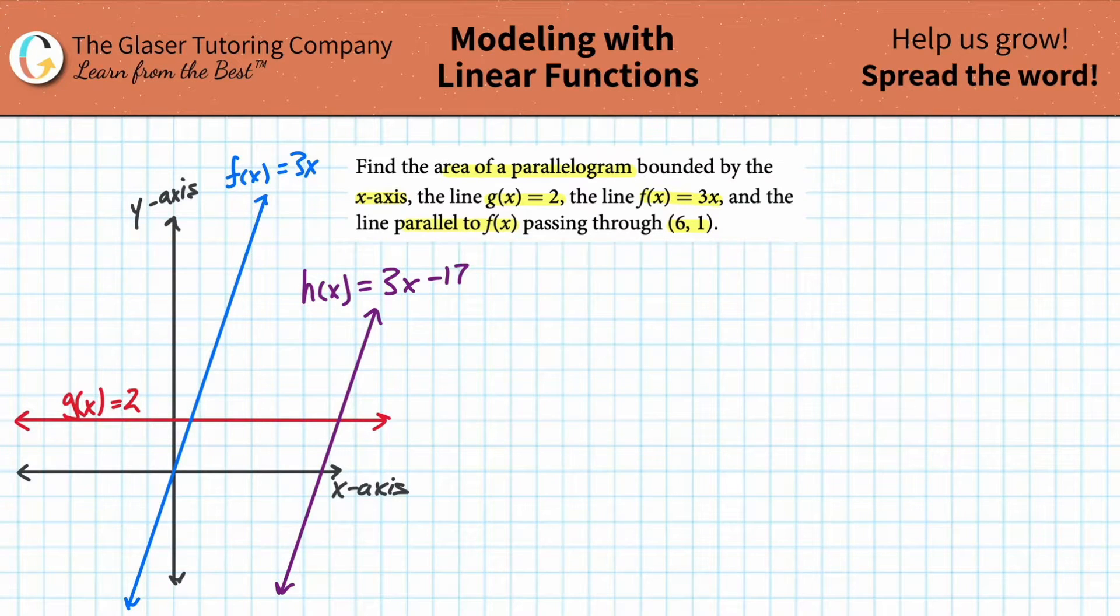Alright, so let's get into it. I already took the liberty of kind of drawing it out for us. I will walk you through it though quickly. So the first thing is the graph of g(x) = 2 is right here in red. It is simply a horizontal line. This is like saying y = 2, so everywhere along this particular line, the y value is 2.